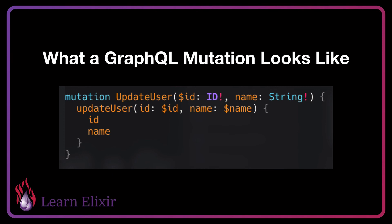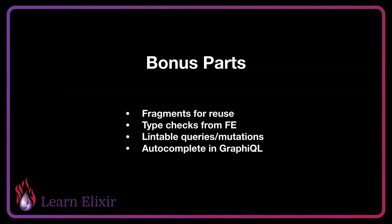One of the interesting things about GraphQL is that because it's meant to be used with JavaScript, it's actually in camel case. Even though for us in Elixir it's going to be snake case, the frontend still interacts with it in their native case, which is camel case.